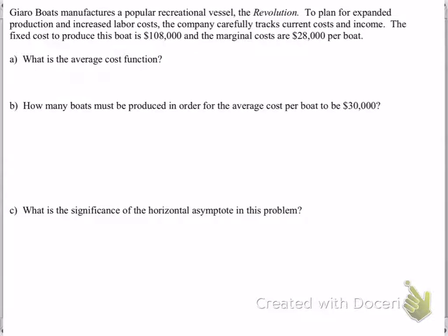Giaro Boats manufactures a popular recreational vessel called the Revolution. To plan for expanded production and increased labor costs, the company carefully tracks current costs and income. The fixed cost to produce this boat is $108,000 and the marginal costs are $28,000 per boat.